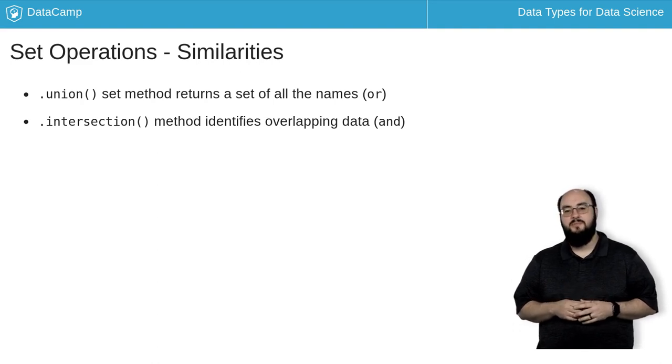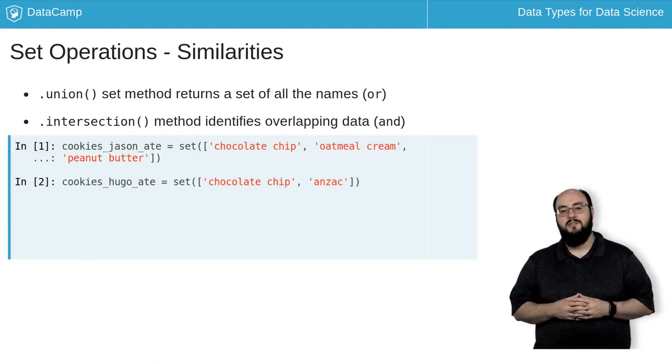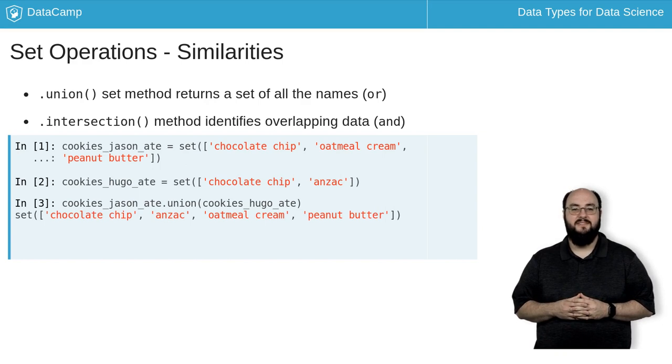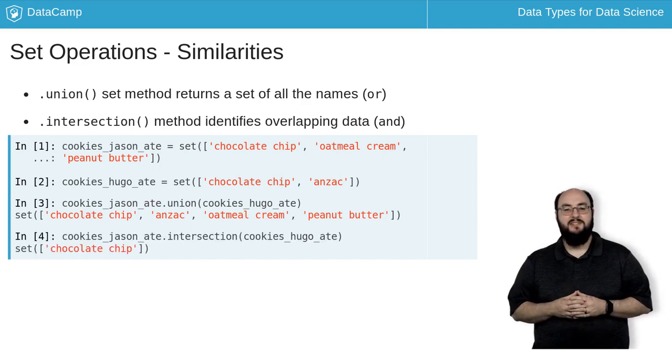Speaking of examples, I'm going to create two new sets of the cookies that Hugo and I have eaten. Then I'm going to use the union method to see the full set of cookies eaten by both of us. Finally, I use the intersection method to see the cookies that Hugo and I both ate in common.